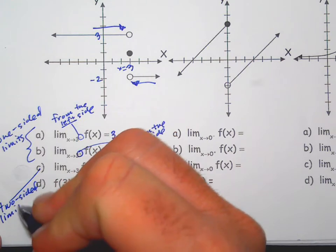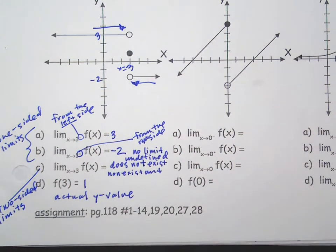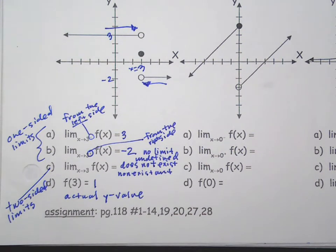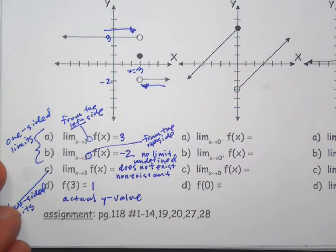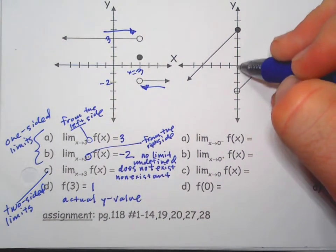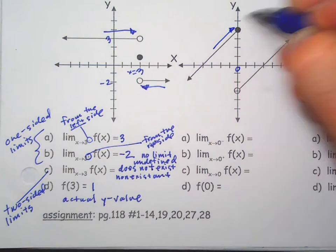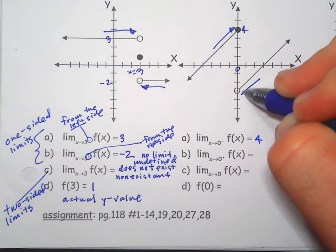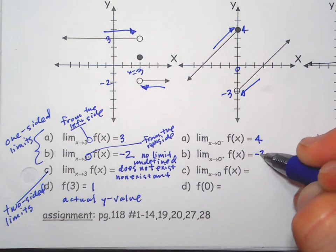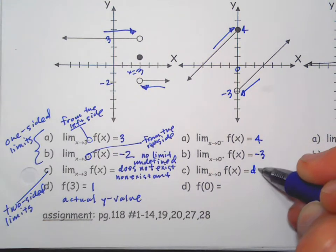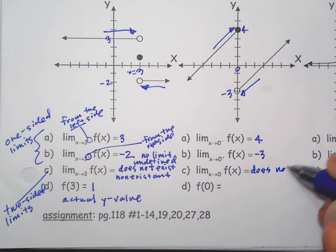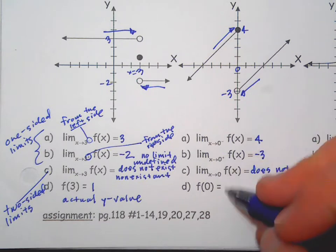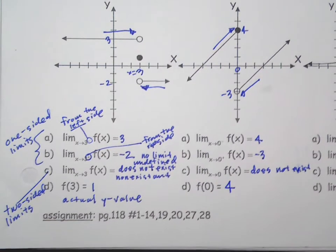They consist of the one-sided limits agreeing. So the next example: we're approaching x equals 0. From the left side, this approaches 4. From the right side, it's approaching negative 3. The limit, the two-sided limit, the overall limit does not exist, and f(0) actually equals 4.